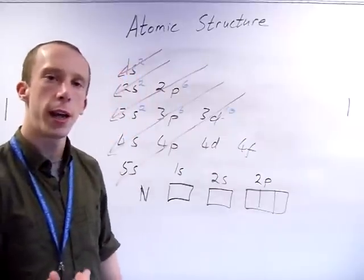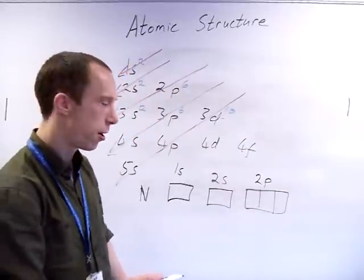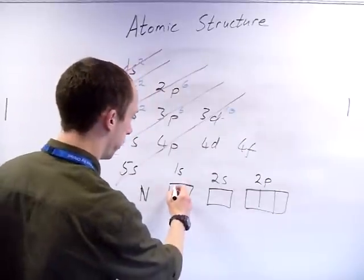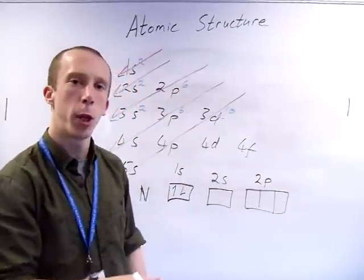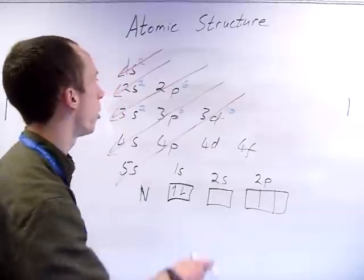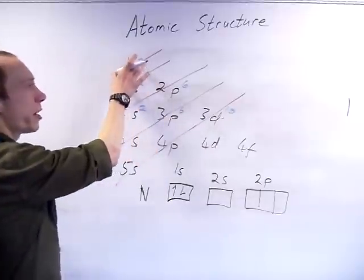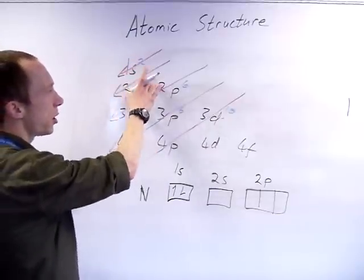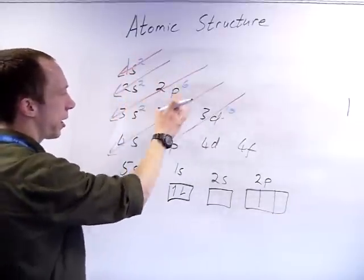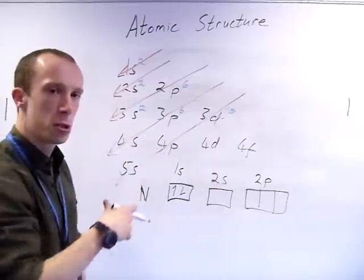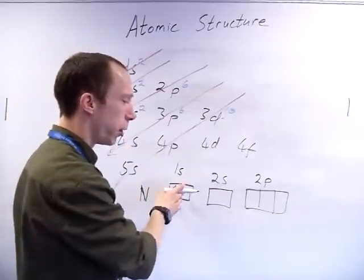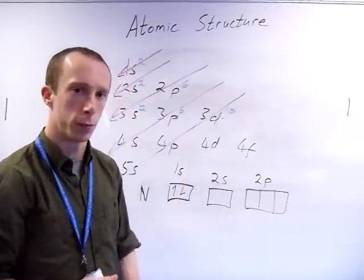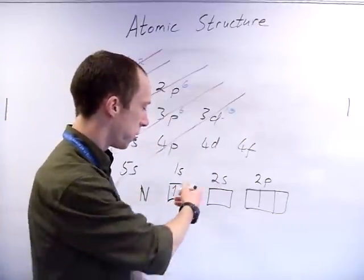Nitrogen has seven electrons. To start filling them up, you always start filling from the lowest energy first. So one S is the lowest, two S next, and so on - fill them up until it's full. Two electrons there.